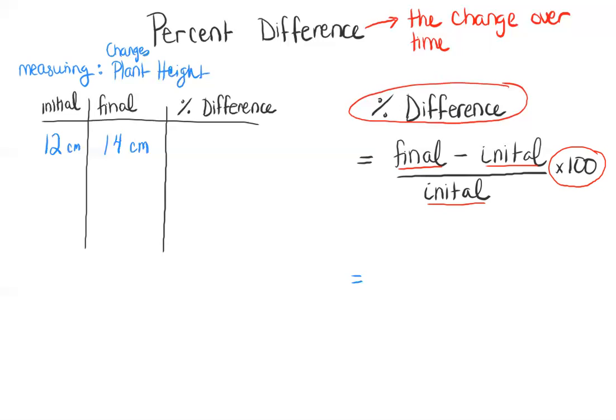So final, the final height was 14 centimeters minus the initial height, which was 12 centimeters, divided by the initial height, which was 12 centimeters. And we will multiply this whole thing by a hundred.